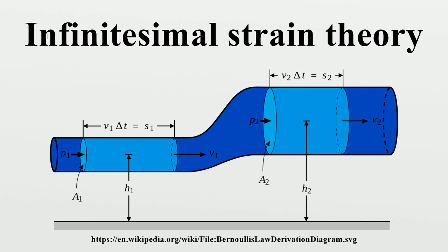Consider a two-dimensional deformation of an infinitesimal rectangular material element with dimensions dx by dy, which after deformation takes the form of a rhombus. From the geometry of figure 1, we have for very small displacement gradients the normal strain in the direction of the rectangular element. Knowing that, we have similarly the normal strain in the y-direction and z-direction.